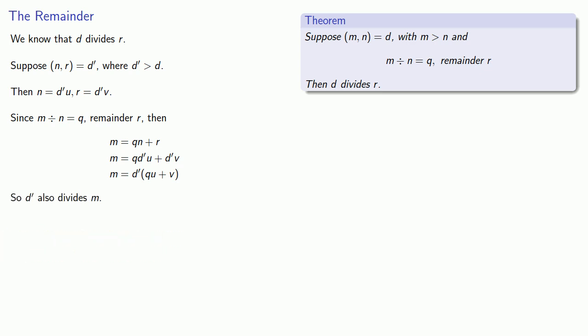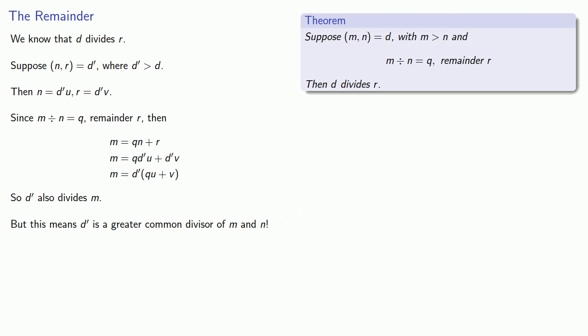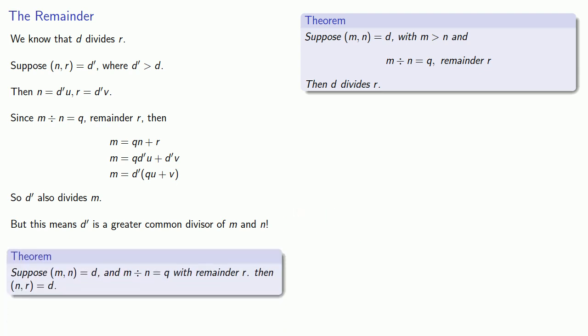So D prime also divides M. But this means that D prime divides M, and since it's the greatest common divisor of N and R, D prime also divides N. So D prime is a common divisor of M and N. This leads to the following important result: if the greatest common divisor of M and N is D, and M divided by N is Q with remainder R, then the greatest common divisor of N and R is also D.